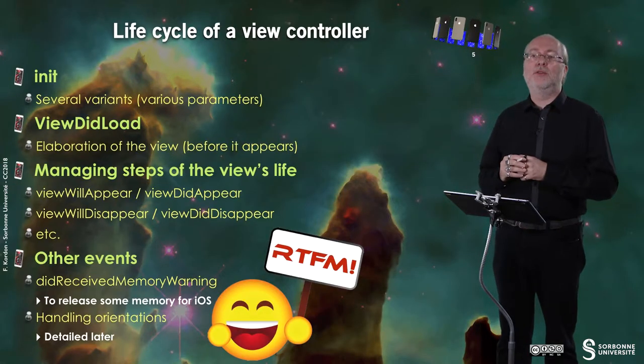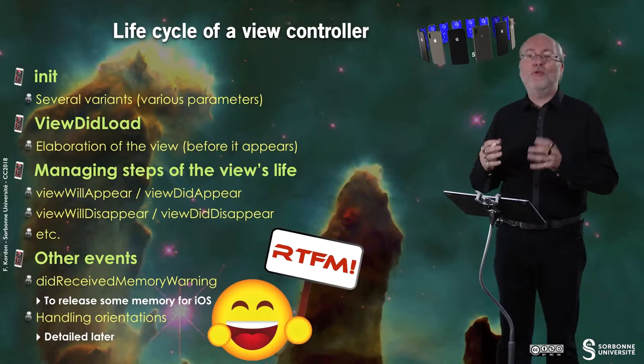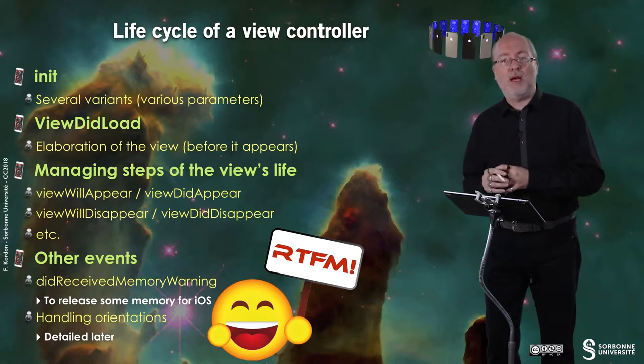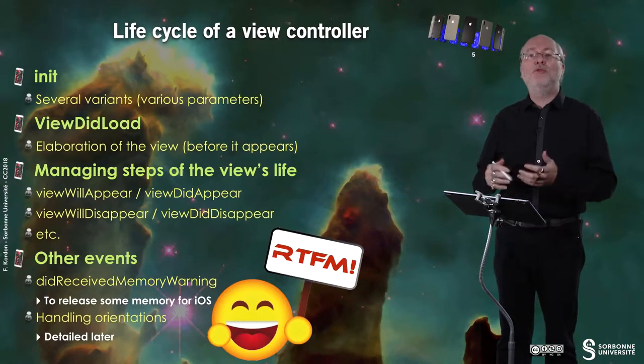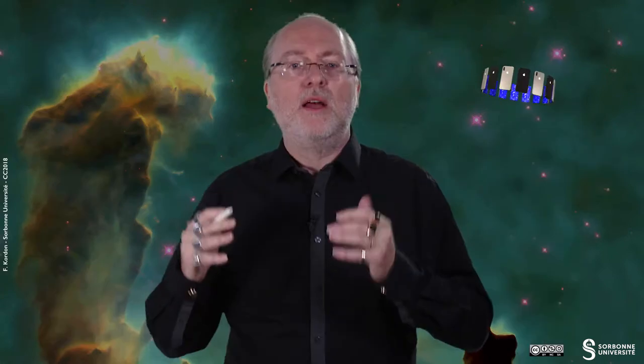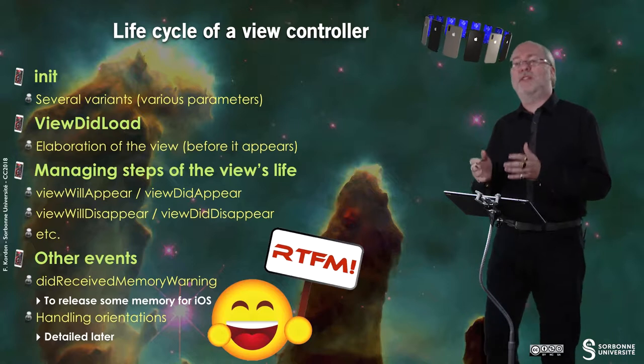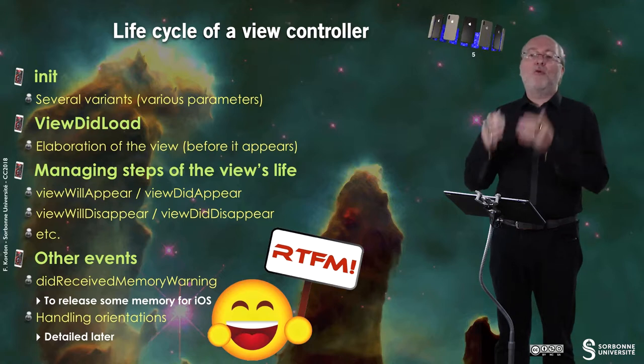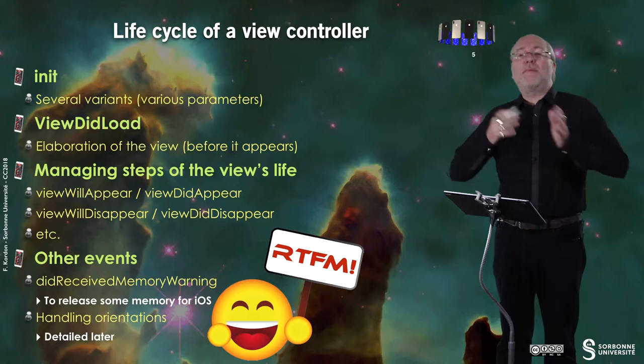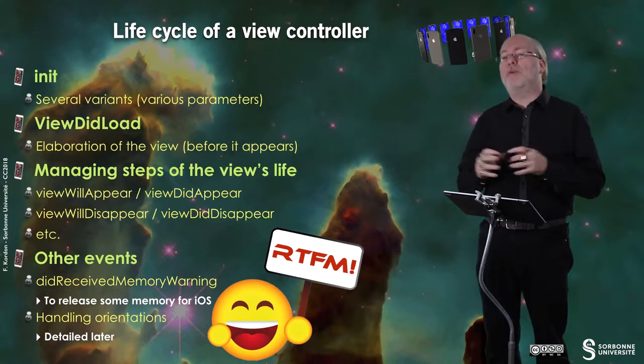The life cycle of a view controller is quite easy. Like most objects, first you create it — there are several variants of init with various parameters. Then, once the view is loaded, a method called viewDidLoad is called if it exists. That's where you can put code to elaborate the view before it appears, such as setting up positions of various elements. You also have viewWillAppear, viewDidAppear, viewWillDisappear, and viewDidDisappear.